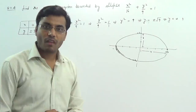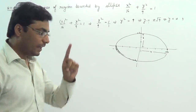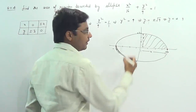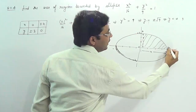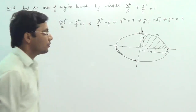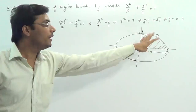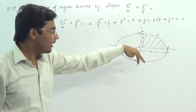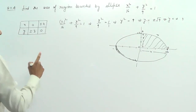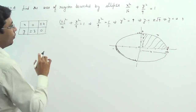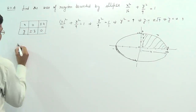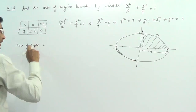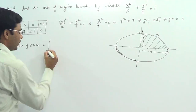We need to find the whole area. To do that, we can calculate one of the parts — I'm finding the area of region ADBO. Then I will multiply this area by 4 to get the whole area, because the figure is symmetrical about the origin.